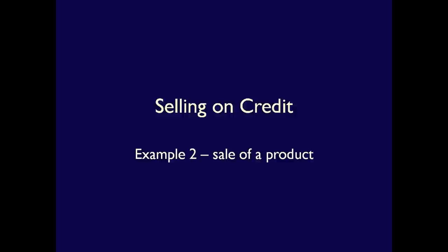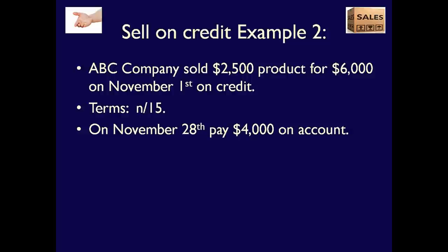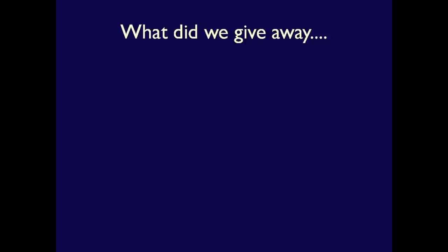What if we sold a product instead of a service? This time, ABC Company, using the perpetual inventory system, sold goods costing $2,500 on credit for a selling price of $6,000 on November 1, 2014. Terms are net 15, meaning the customer must pay the full amount within 15 days. On November 28, after two phone calls, the customer pays $4,000 on account. The remaining $2,000 is paid on December 18.